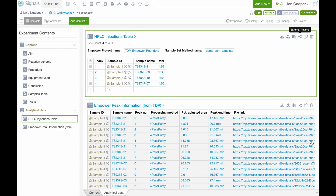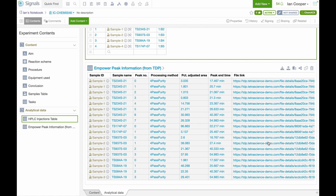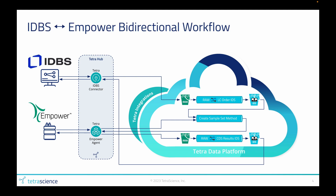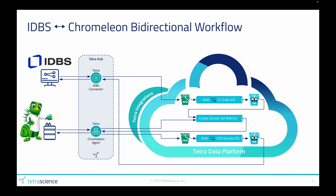And now we've completed that round-trip workflow. It's important to note that we're using two particular tools — Signals Notebook and Empower CDS — but these could easily be replaced with other informatic systems or chromatography data systems of your choice. For example, we could use IDBS eWorkbook instead of Signals through our IDBS connector, and we could use Chromelion instead of Empower with our Chromelion agent. The overall data flow and structure remains the same, making it very easy to mix and match informatic systems and chromatography data systems, freeing you from vendor lock-in.